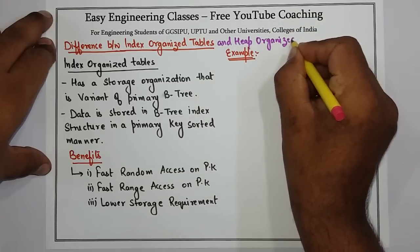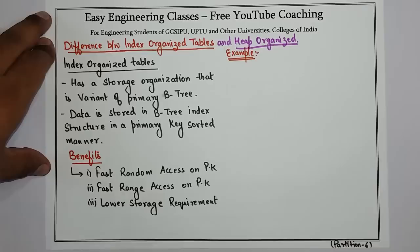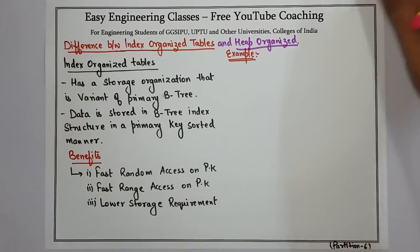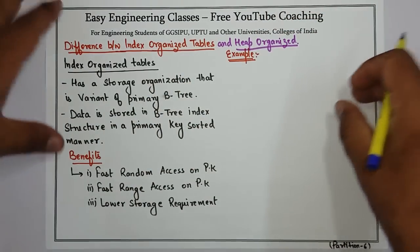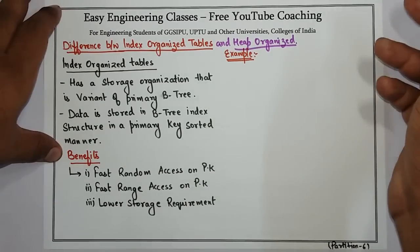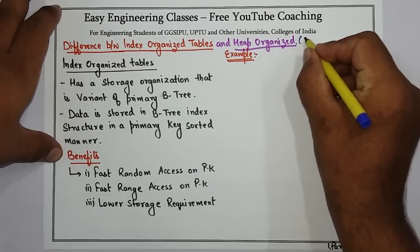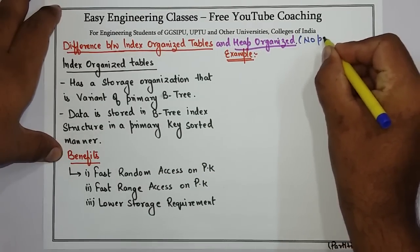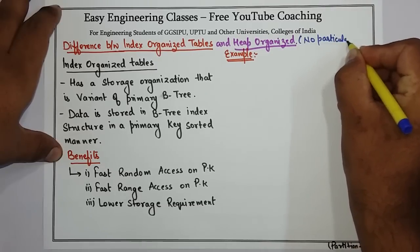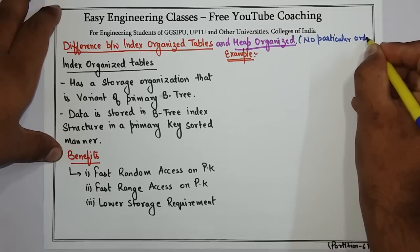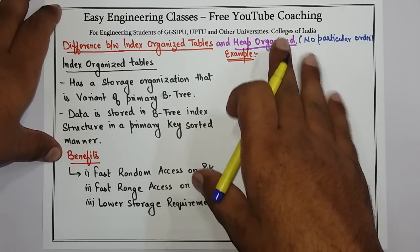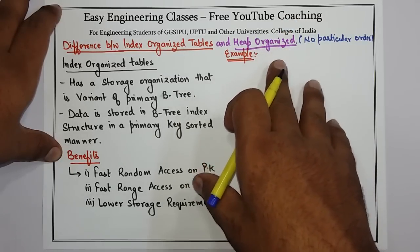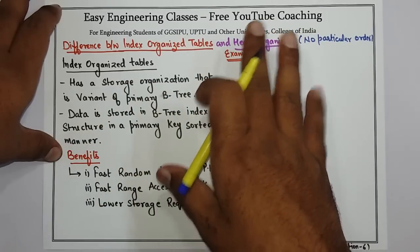First let's discuss about heap organized tables. A heap organized table is a regular table that you must have created in your database classes. It is a regular table where rows are not stored in a particular order — there is no particular order. The term 'heap' is just used to differentiate it from the index organized or the external table.